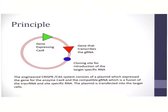it needs to be fused to its relevant promoter, which will function in that particular system. The gene that transcribes the gRNA is indicated in red, and this can be inserted into the vector as well. The blue represents the cloning site for the specific RNA molecule which needs to be targeted.